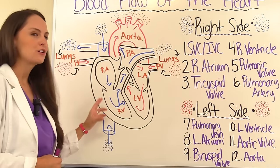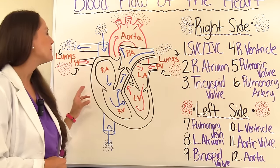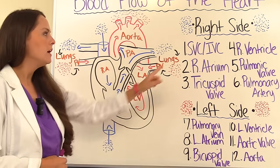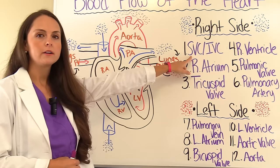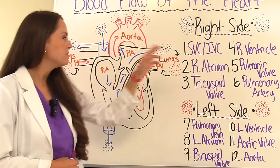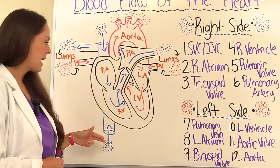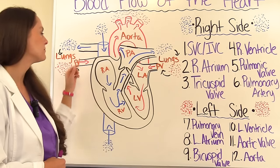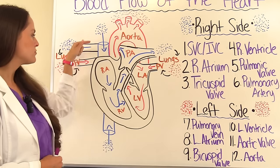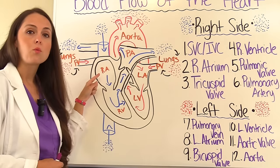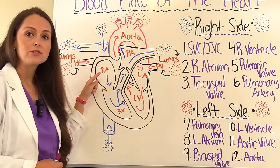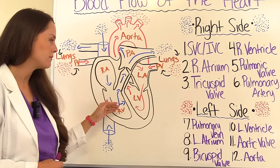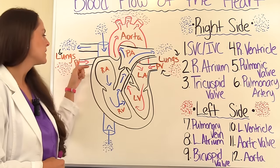Everything starts on the right side of the heart, and blood is being drained to the heart from the superior vena cava and the inferior vena cava. It's exhausted and it needs to get replenished with oxygen, so it drains down through the right atrium. The atria are always on top of the ventricles, so remember that.